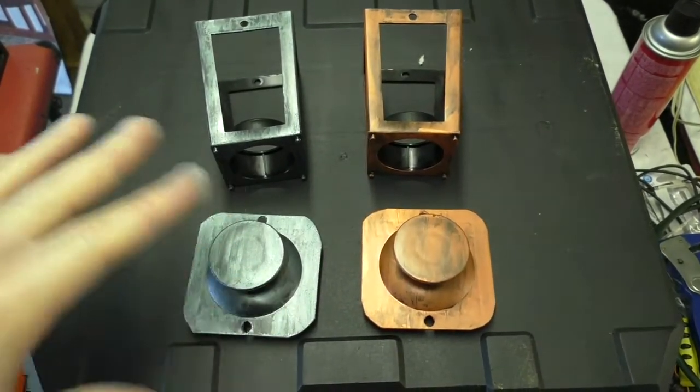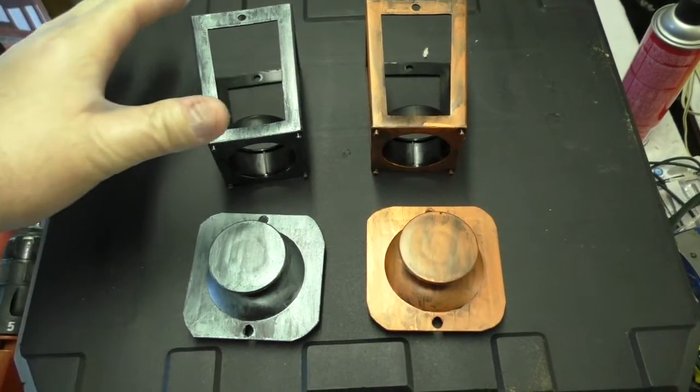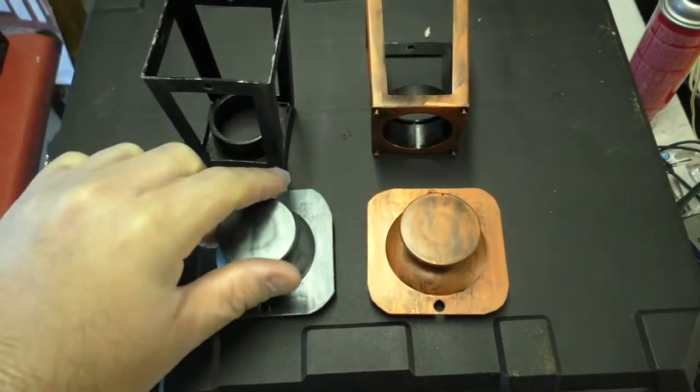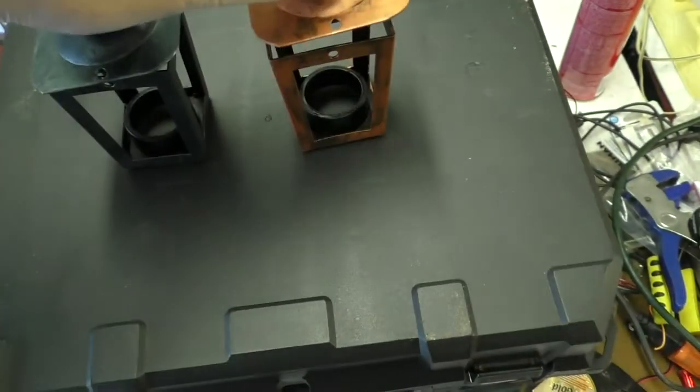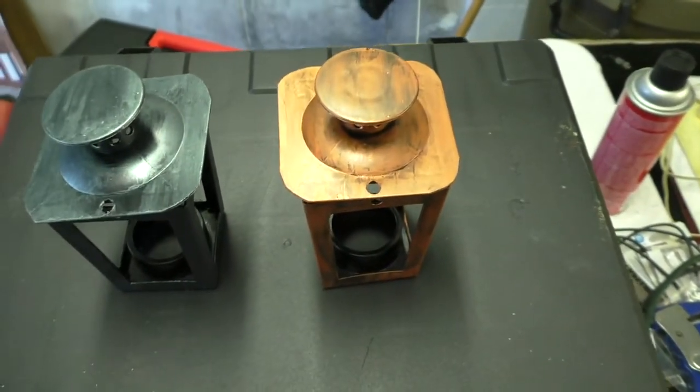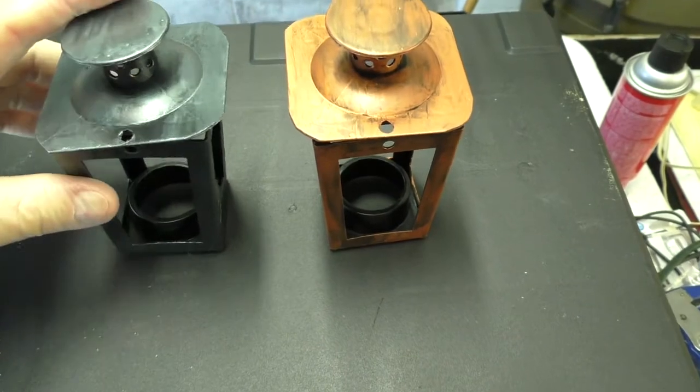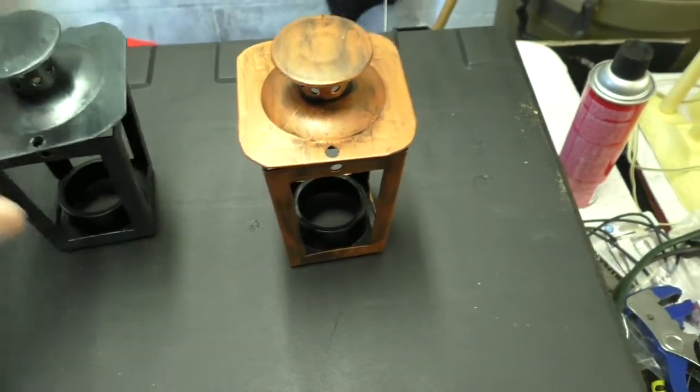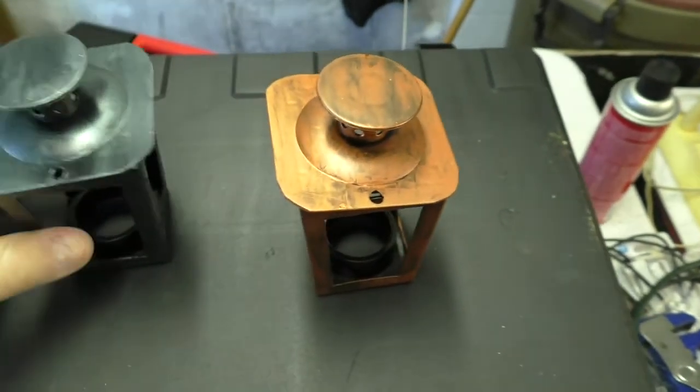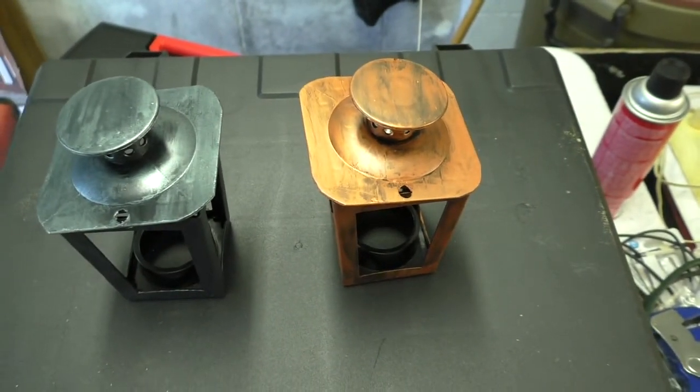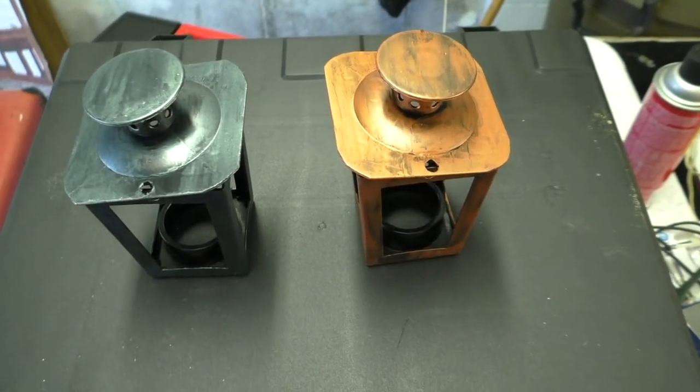So as you can see, I've decided to use rub and buff on two of them. So this one we went with a silver. This one we went with a copper. So the next step is I'm going to give these a bath in black. And if you don't know what I'm talking about, let me show you.